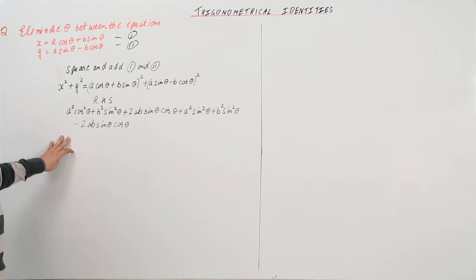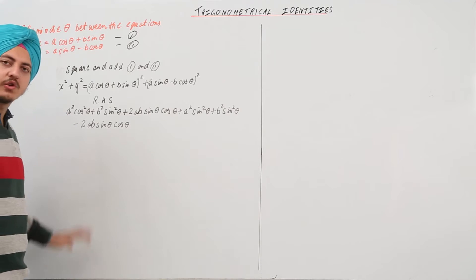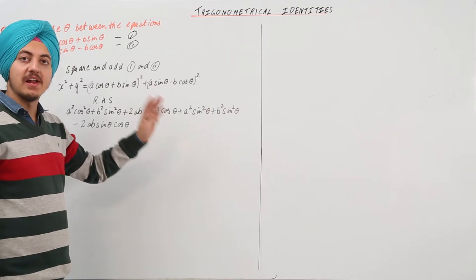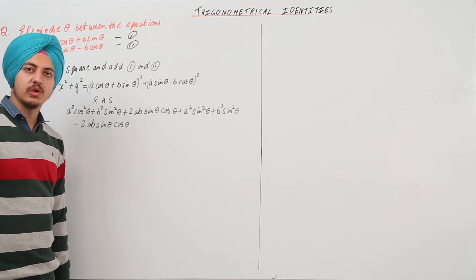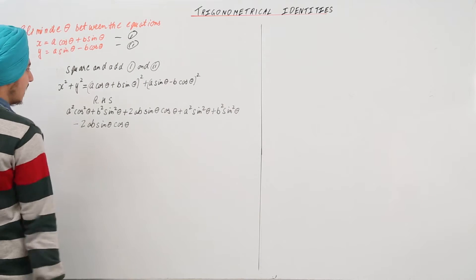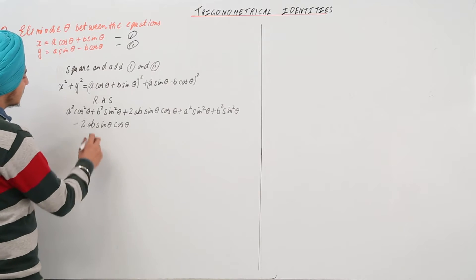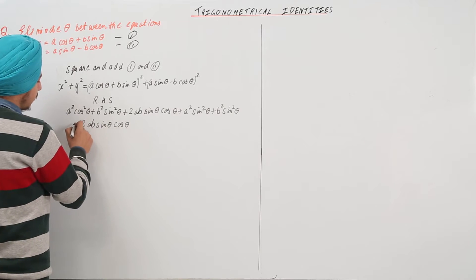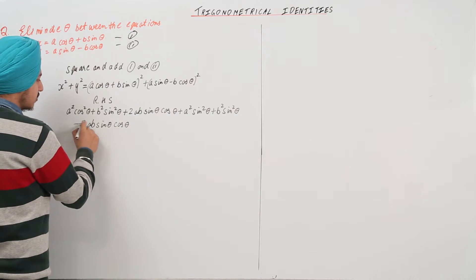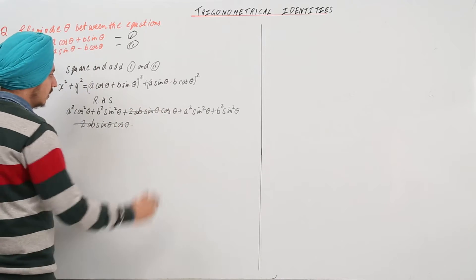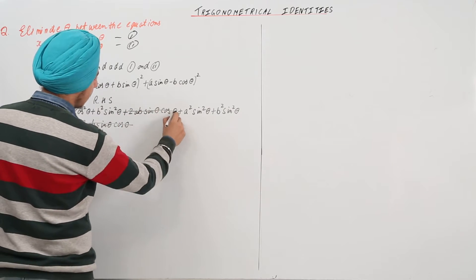I have just opened both the brackets using: a plus b whole square equals a square plus b square plus 2ab, and a minus b whole square equals a square plus b square minus 2ab. The plus 2ab term and the minus 2ab term are equal and opposite, so they cancel out.